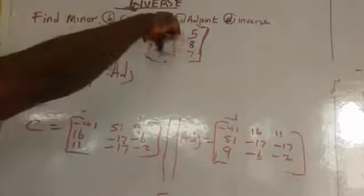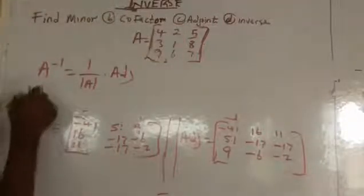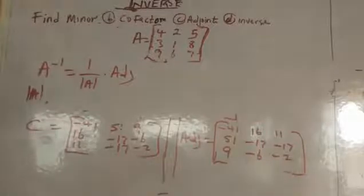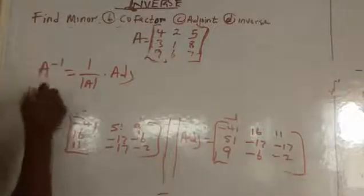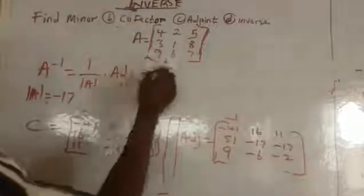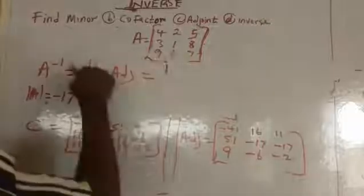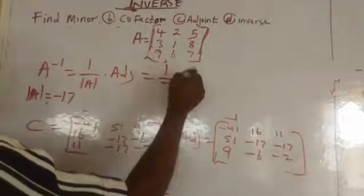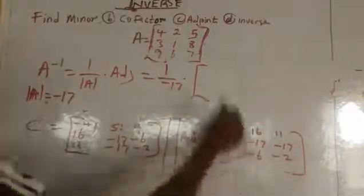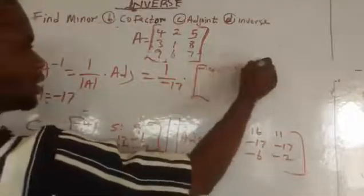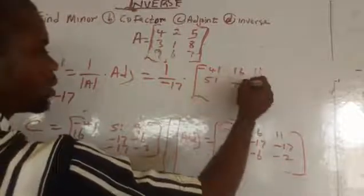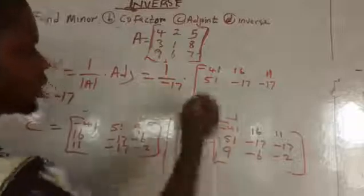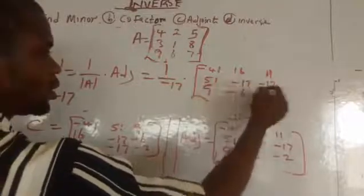We've done videos on how to find determinants of 2×2, 3×3, even 4×4 — please go back and check our videos. Our determinant works out to be minus 17. So we write the adjoint matrix as: minus 41, 16, 11; 51, minus 17, minus 17; 9, minus 6, minus 2.